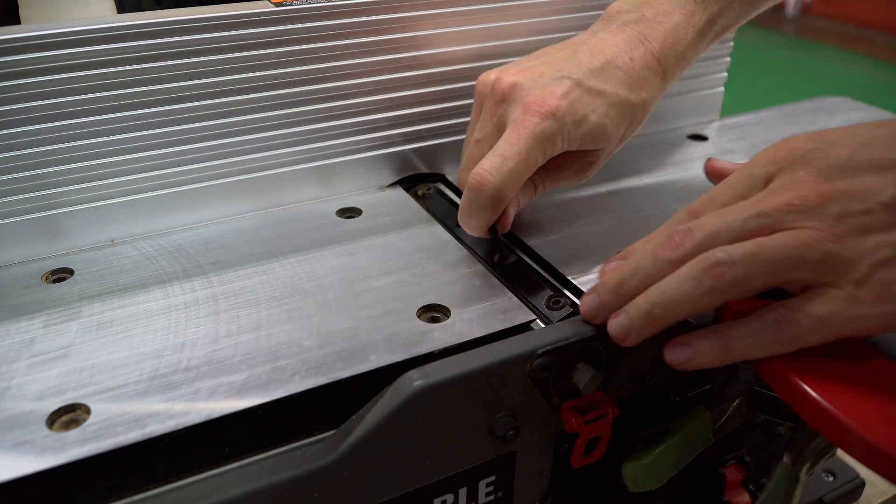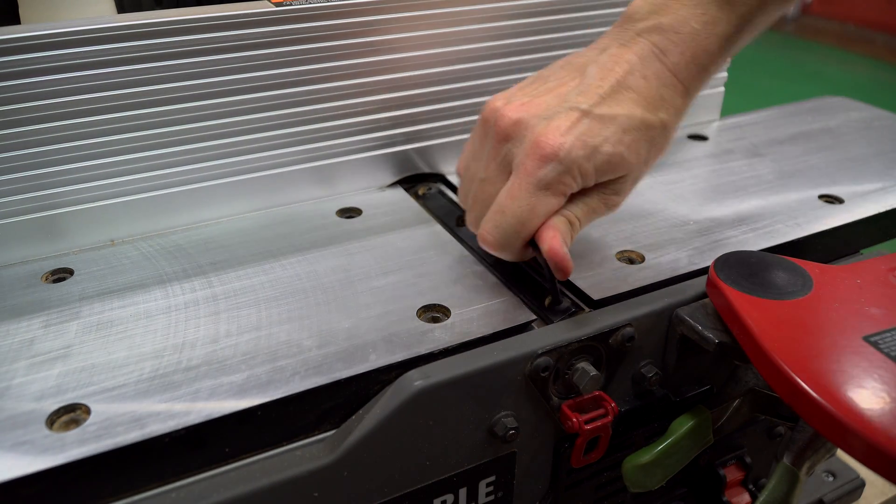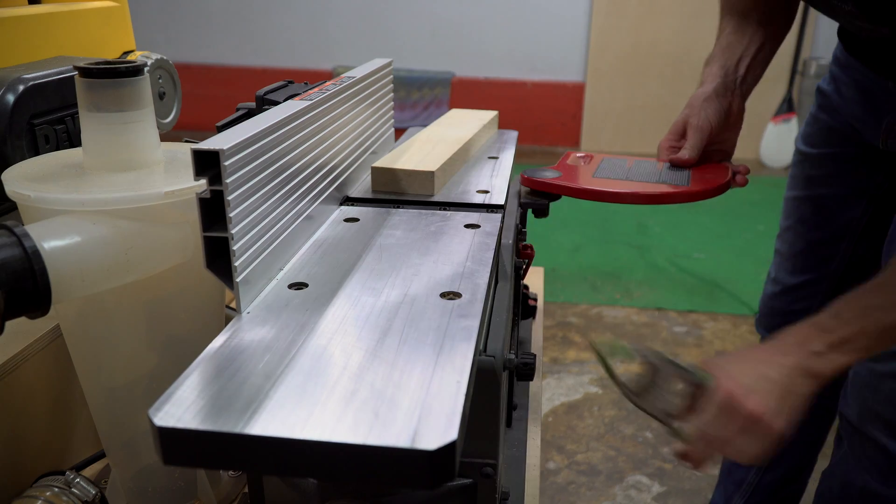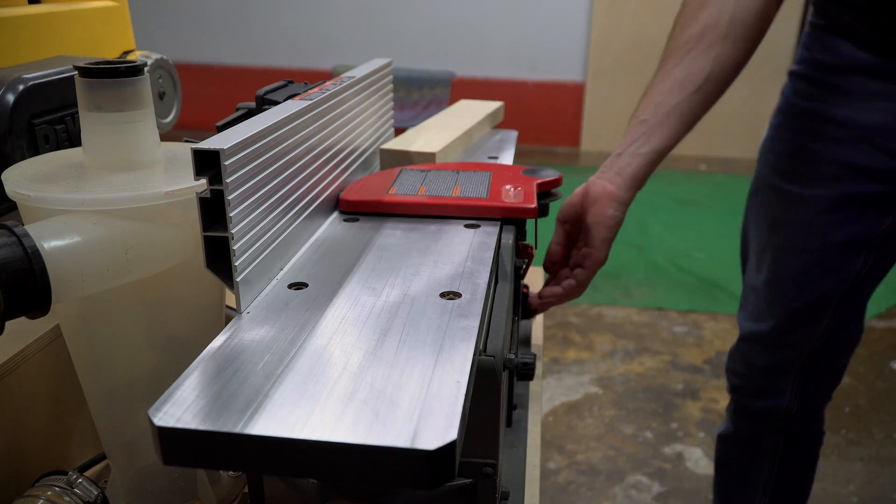Again, make sure the clamping plate screws are nice and tight. And finally, you can test the jointer to see if you're getting nice flat cuts.